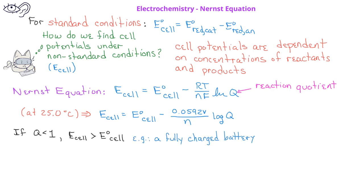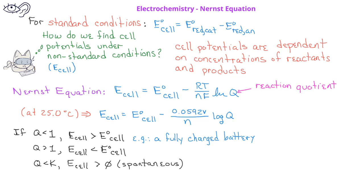However, as the reactants are consumed to produce products, Q eventually becomes greater than 1, and in these situations the cell potential eventually becomes less than the standard cell potential. As the reaction continues, Q will be less than the equilibrium constant K, which indicates it will still have a spontaneous process, and the overall cell potential will still be positive.